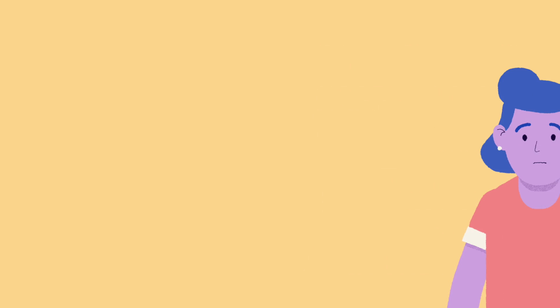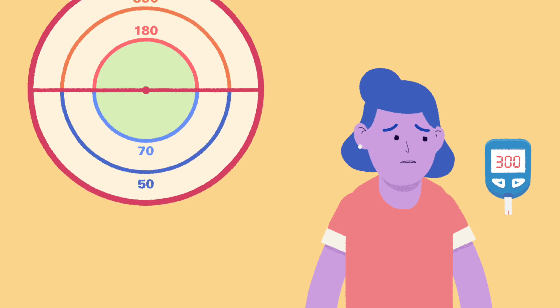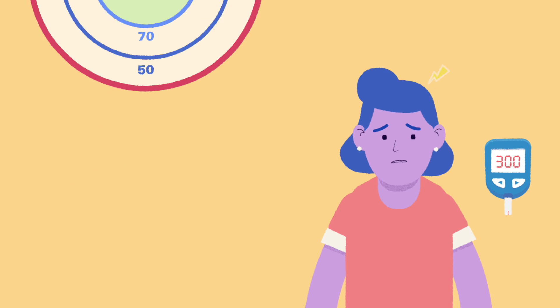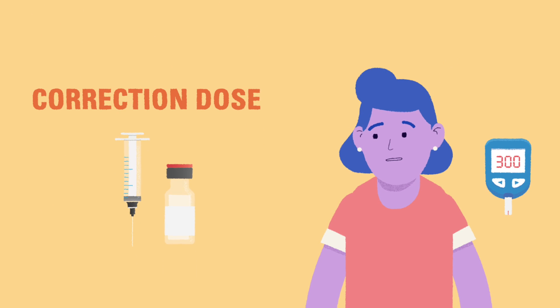If a child's blood glucose is higher than their correction target, you may need to give additional insulin to correct their blood glucose. This is called a correction dose.